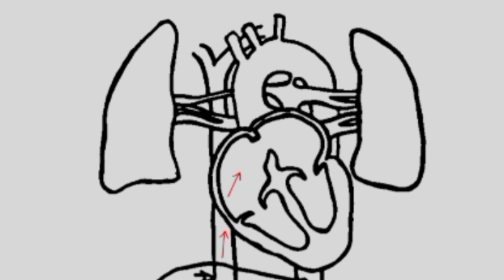From the right atrium, blood flows through the foramen ovale into the left atrium and then to the left ventricle. When the ventricles contract, blood from the left ventricle flows into the aorta. This highly oxygenated blood is delivered to the brain via the subclavian arteries and is also delivered to the fetal myocardium.